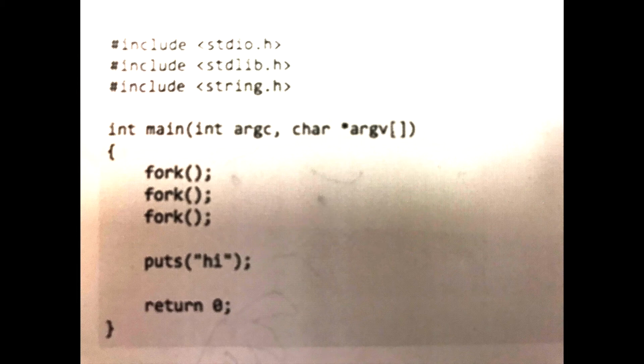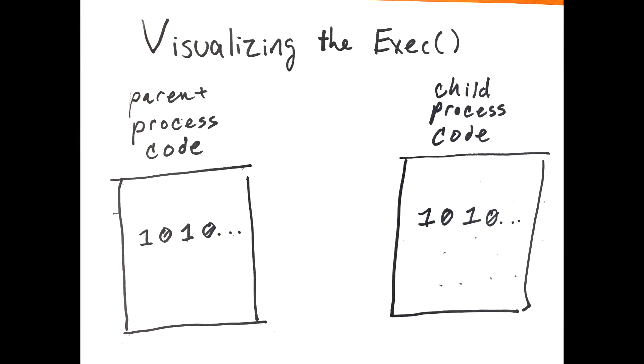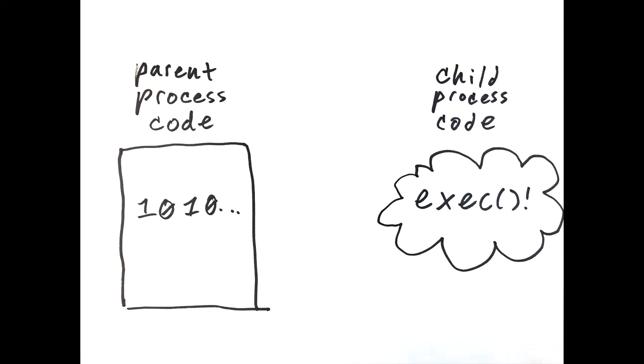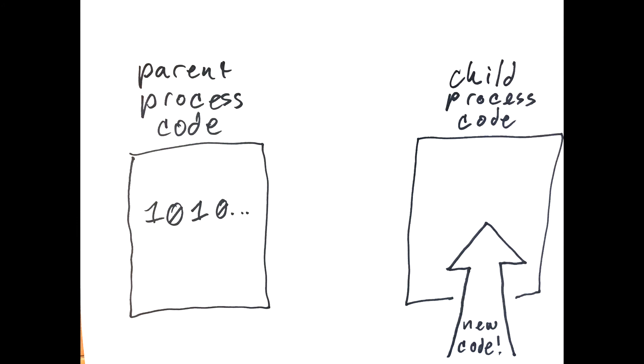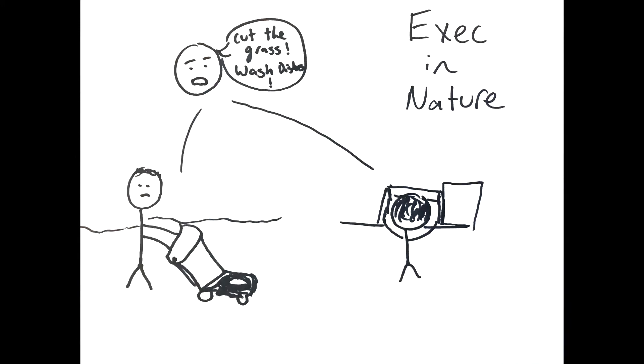Calling the exec system call replaces the process's memory space with a new program. The exec call loads a binary into memory, destroys the memory image of the program containing the exec system call, and starts its execution.